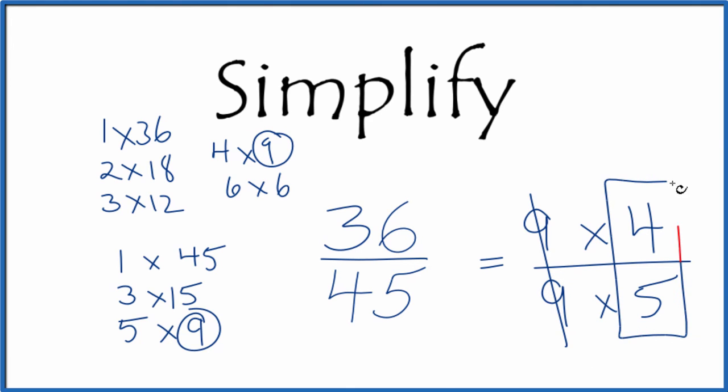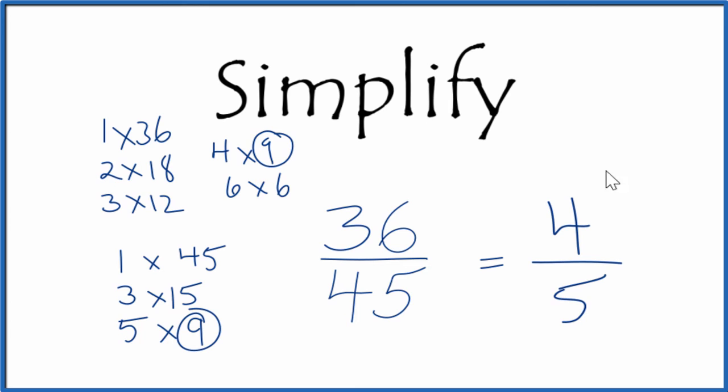We end up with 4/5, and we can't reduce this any further. So we've simplified the fraction 36/45 down to 4/5. And these are equivalent fractions. They have the same value. If you divide 36 by 45 or 4 by 5, you're going to get the same number.